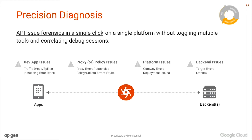The developer application issue continues to come up — this was one of the key things raised during our Alpha program as well. Many customers said: it's great to figure out the impact on our side, but we really want to know which customers are getting affected. Which developer apps are failing? Because for customers tracking different SLAs for different tiers of customers, knowing which specific apps are impacted becomes a very important capability.